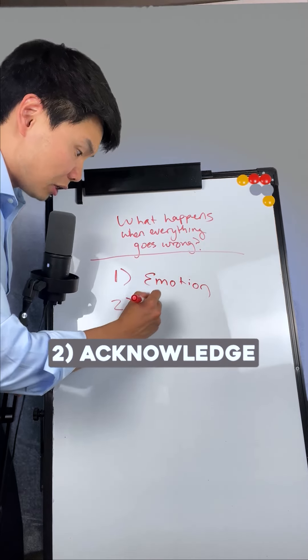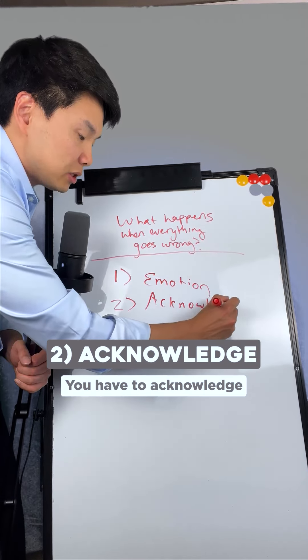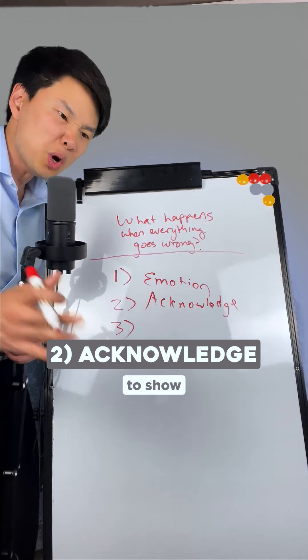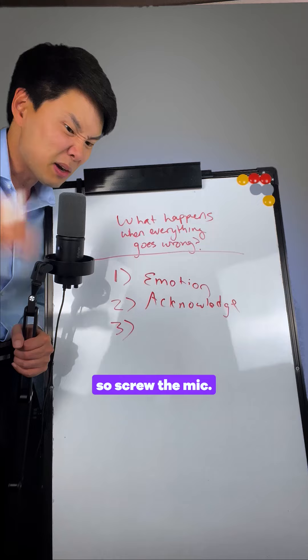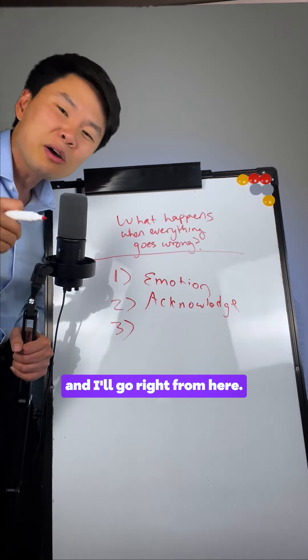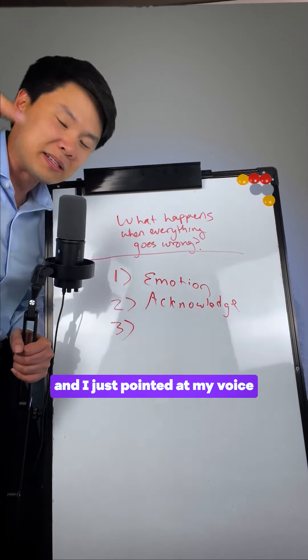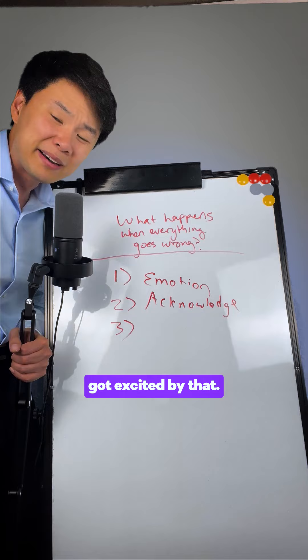The second thing I do is I acknowledge the error. You have to acknowledge when something isn't working to show that you are in complete control. So in this case, I said, well, clearly the audio isn't working. So screw the mic. Let's put it down and I'll go right from here, my vocal cords. And I just pointed at my voice and everyone got excited by that.